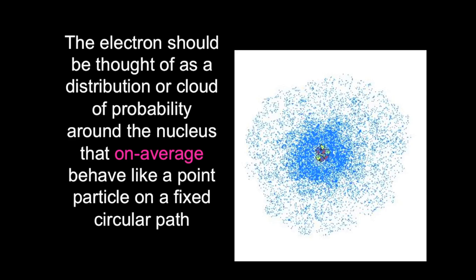In some locations it has a higher probability of being than in others, and so when we describe the electron orbits in an atom, we're describing the average behavior of those particular electrons.